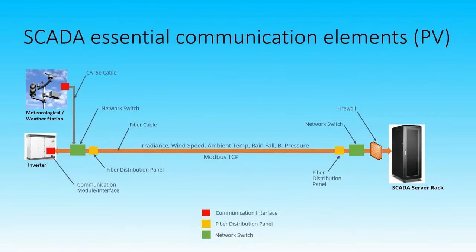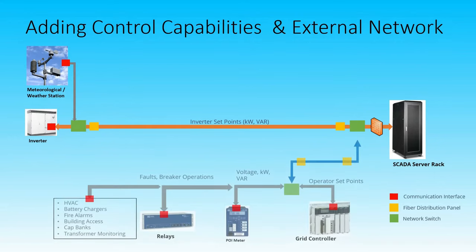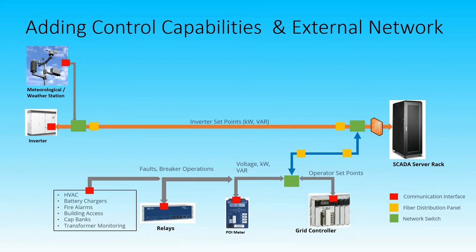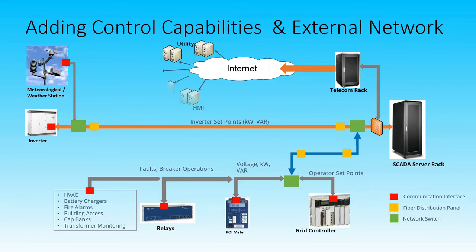In addition, live data parameters such as irradiance, wind speed, and ambient temperature — all relating to your weather station on the left — are also being collected. Adding more functionality such as controls, we now have grid controllers and relays that enable the user to send setpoints and breaker operations. With those information available on the SCADA server rack, you can also configure it to send those parameters out to the internet. Once configured properly, your data is accessible anywhere and remote operators can access the site remotely, transmitting the data over the internet.